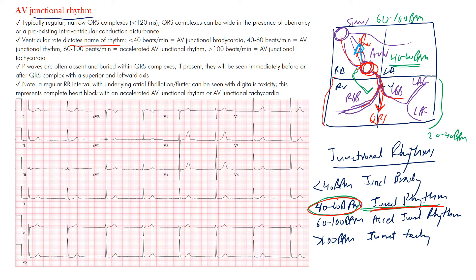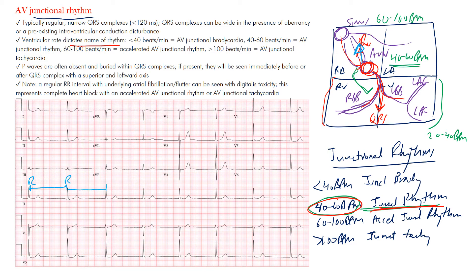Here is an example of a junctional rhythm on an EKG. Looking at lead II, notice there are no P waves before any of the QRS complexes — normally a P wave would precede each complex but none are occurring. The rhythm is regular: the R-to-R intervals are all the same duration. The QRS complex is narrow, consistent with junctional origin.